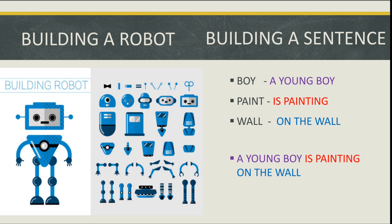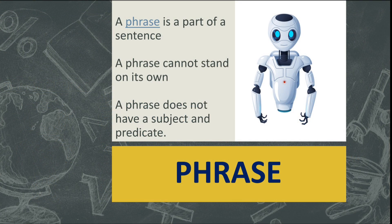I added a few words to the word 'boy' to get 'a young boy' — this is a phrase that speaks about a boy, but it is not a complete sentence and doesn't give complete meaning. Similarly, 'is painting' and 'on the wall' are also phrases. When we combine all these phrases together — 'a young boy is painting on the wall' — it gives us a complete sentence.